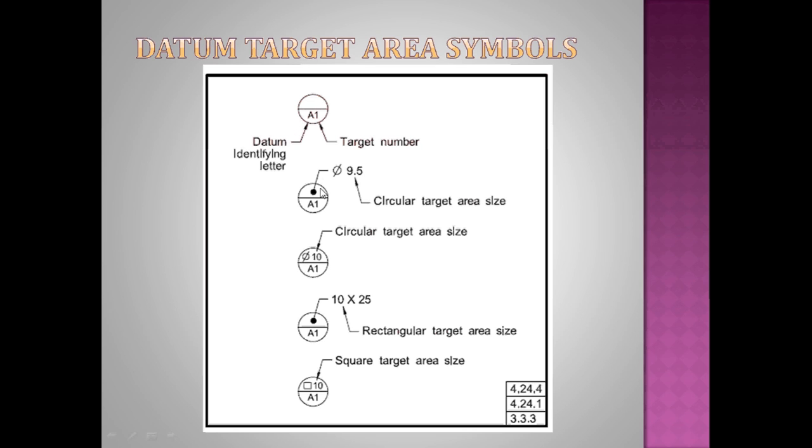You can see here the size can be entered directly - dia 9.5. This is basically a circular target area. The size of the circular target area is 9.5 dia. If you don't have space, with the help of an arrow place it outside. If you have space, place it inside. This is a rectangular target area - with the arrow it has mentioned here. A square target area - with the symbol it is entered here.